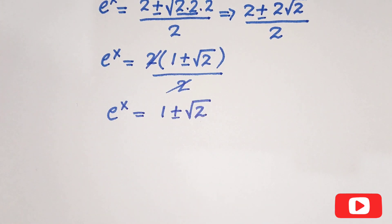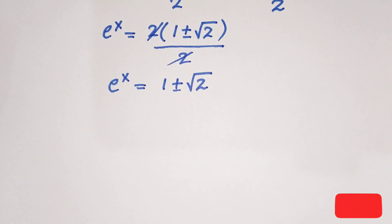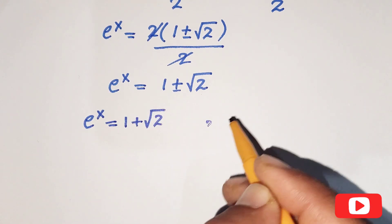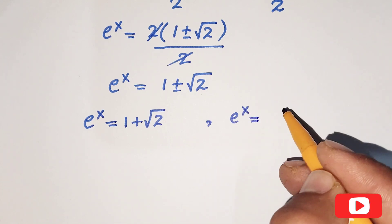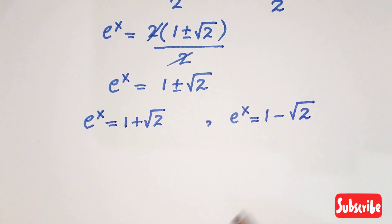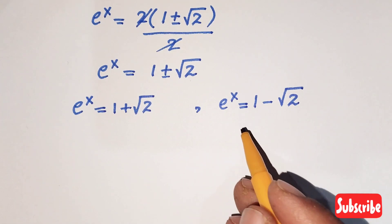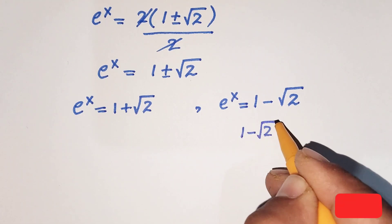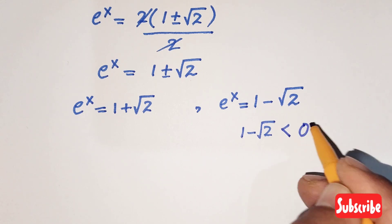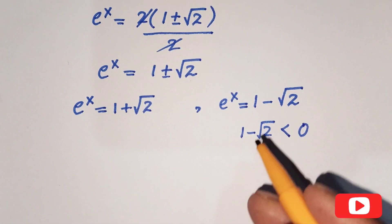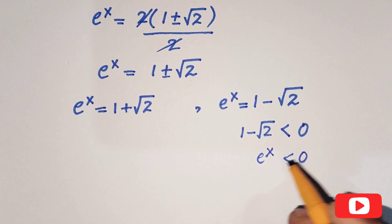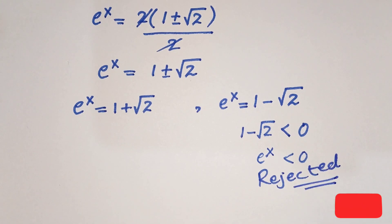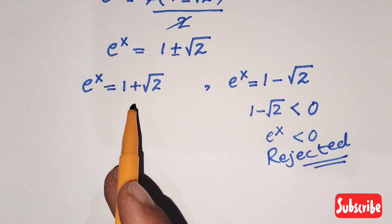So e raised to power x has two values: 1 plus square root of 2, and 1 minus square root of 2. However, 1 minus square root of 2 is less than 0, and since e raised to power x cannot be negative, we reject that value. So we use e raised to power x equals 1 plus square root of 2.